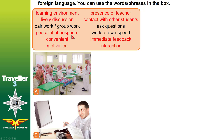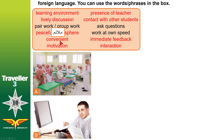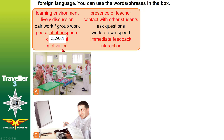More key terms: peaceful atmosphere — like environment, everything around you in the place where you study — peaceful means it doesn't make you worried. Working at your own speed means you can go fast or slow as you want. Convenient means it's useful and makes you more efficient. Immediate feedback means a very quick response — you say something and someone replies right away. Motivation means the reasons why you should learn. Interaction means having someone to talk or work with.